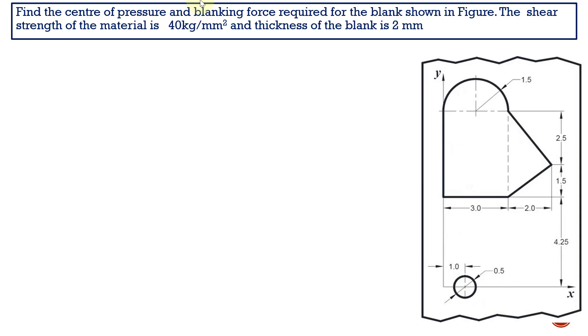Find the center of pressure and blanking force required for the blank shown in the figure. The shear strength of the material is 40 kilogram per millimeter square and thickness of the blank is 2 mm. This is the irregular shape which is given, and for that we need to find out the center of pressure.